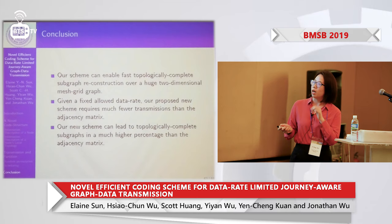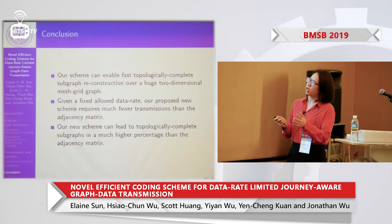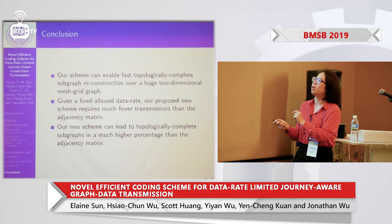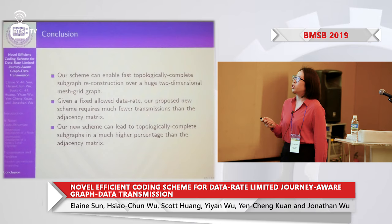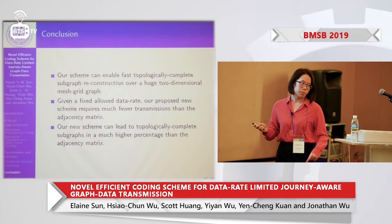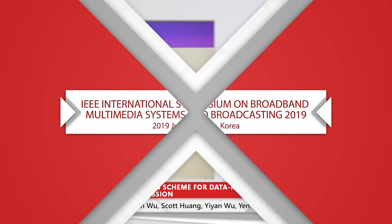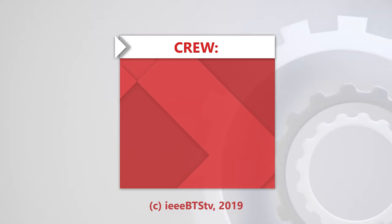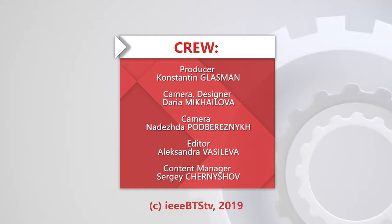Here is the conclusion. Our new scheme can enable fast topological complete subgraph reconstruction over a huge two-dimensional map. Given a fixed low data rate, our proposed new scheme requires much fewer transmissions than the adjacency matrix. Furthermore, our new scheme leads to topologically complete subgraphs at a much higher percentage than the adjacency matrix. This is the end of my presentation. Thank you.